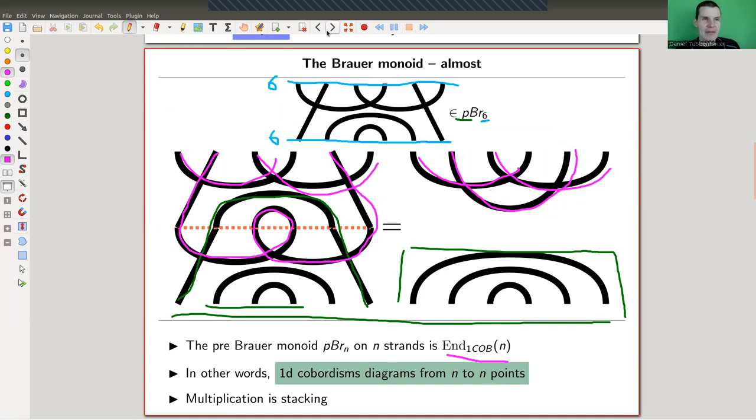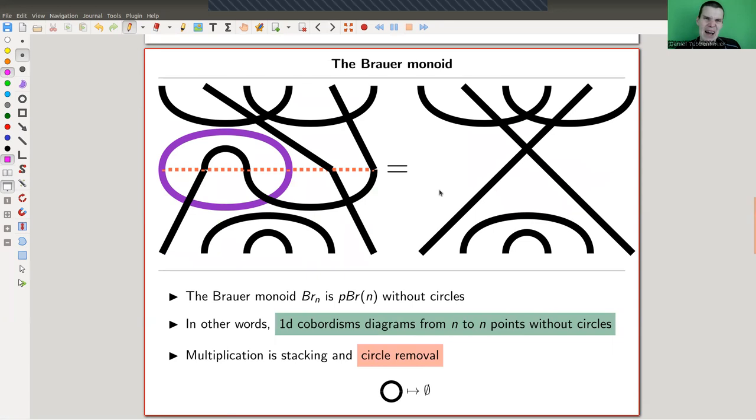Well, it's almost Brauer monoid. The problem is a cobordism could have internal components like circles. And that's a bit annoying for the monoid version, because then you get an infinite monoid. You can have arbitrary number of those circles. It's quite easy to see that you only have a finite number of pictures without circles. But of course, with circles, I could keep on drawing here circles. There's no embedding involved in the abstract pictures.